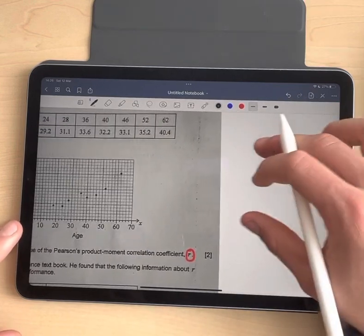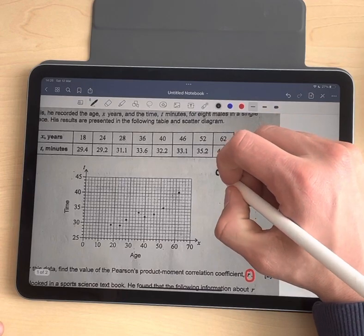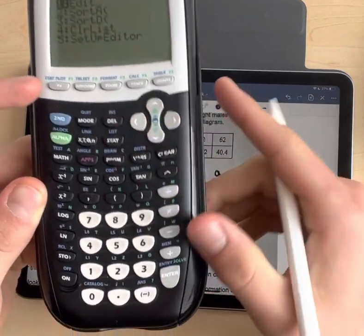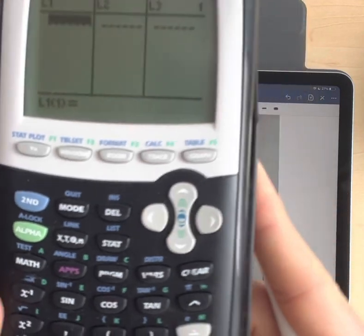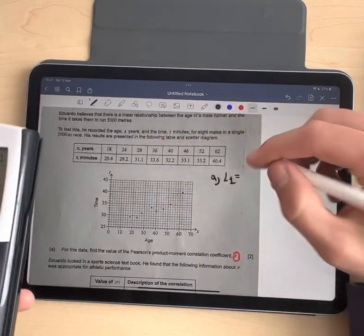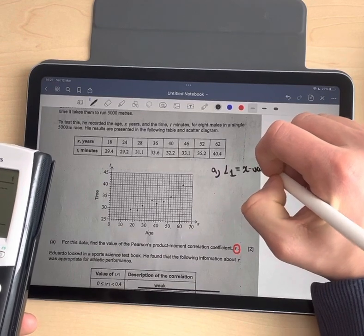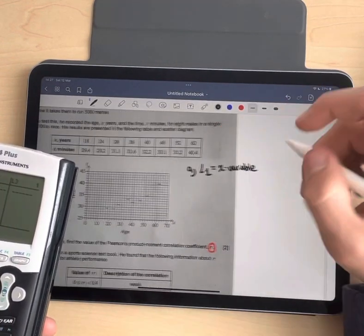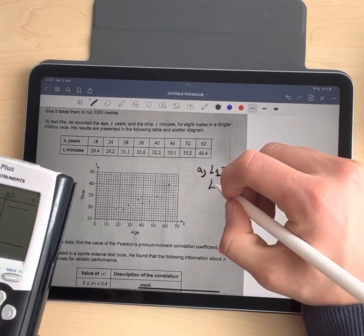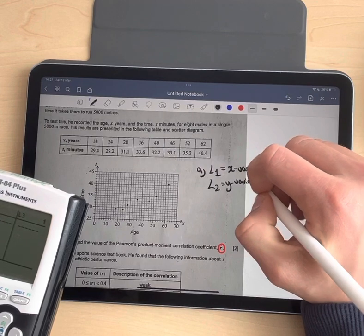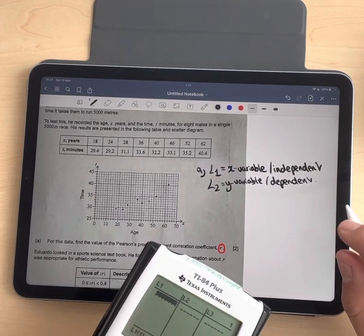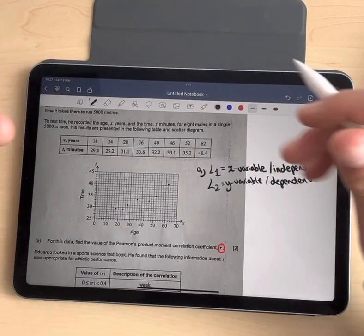We're trying to find R. So how do we do this with our calculator? We take our calculator, and it's important that we go stat and we click number 1 for edit. In L1, you write the X variable, the independent variable. And in L2, the Y variable, the dependent variable. This is basically what we do.